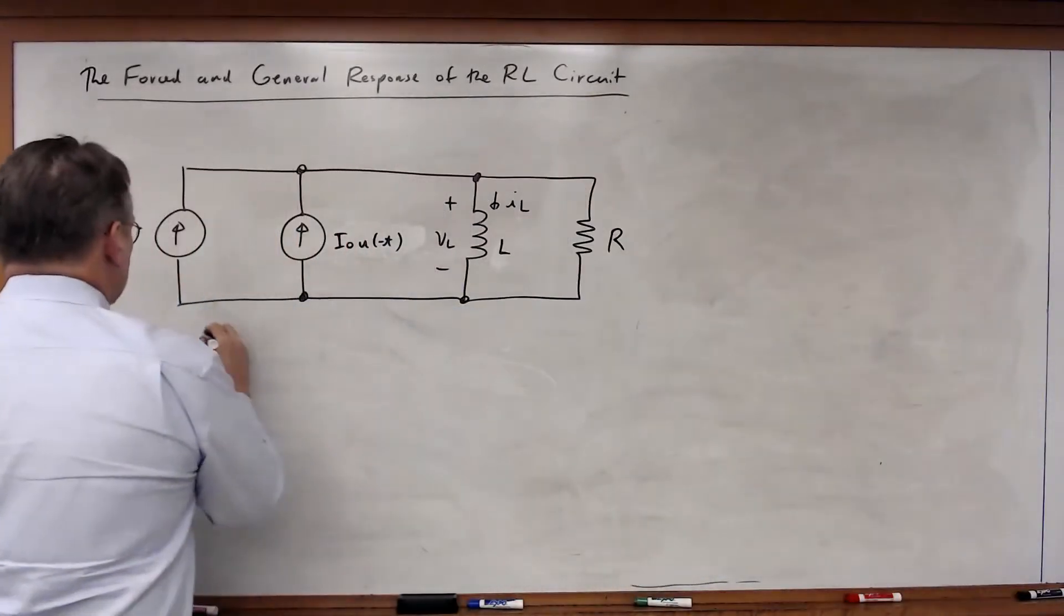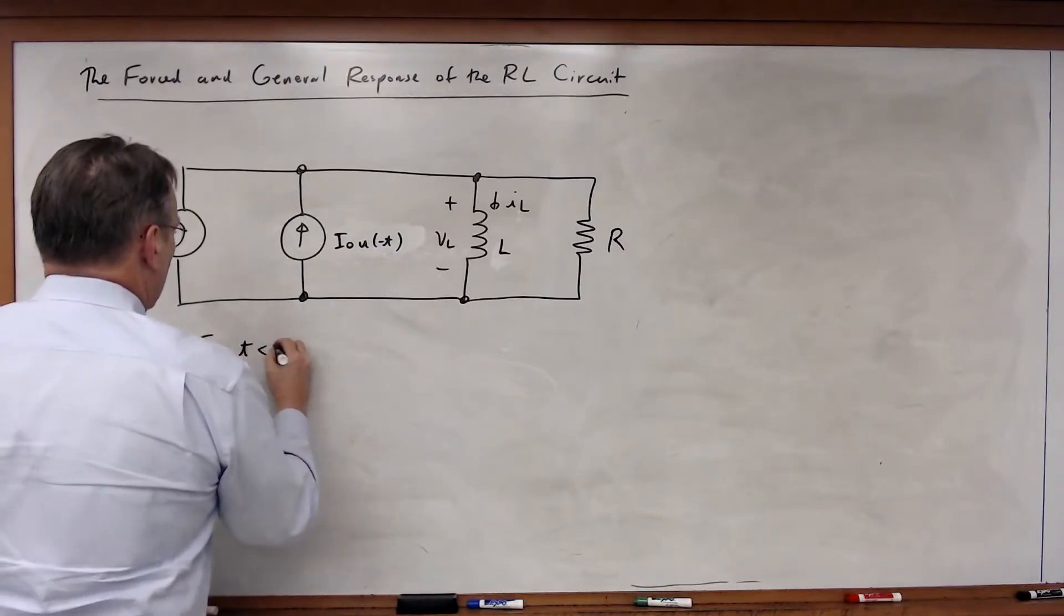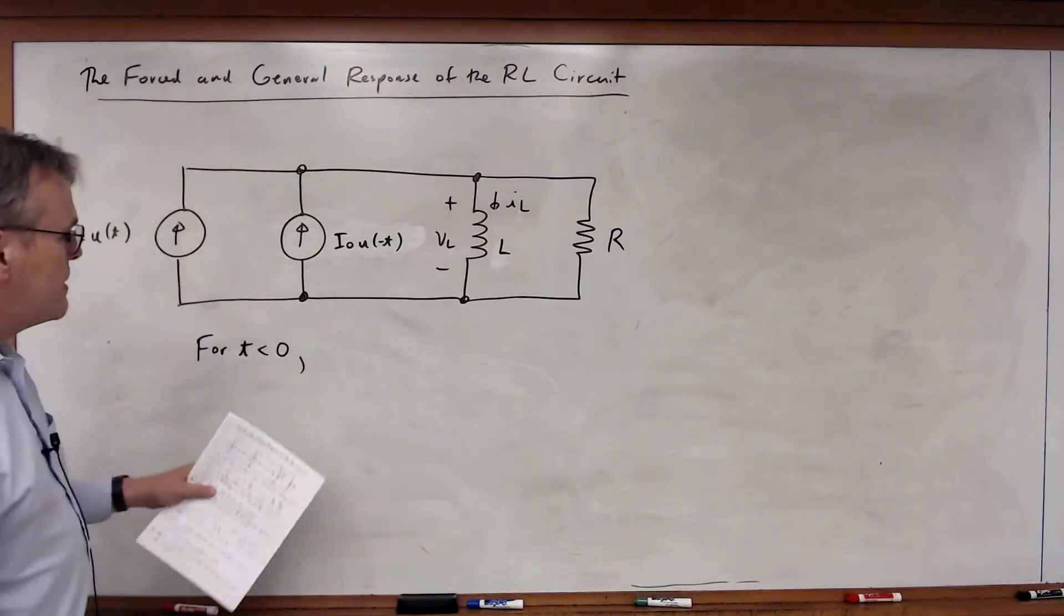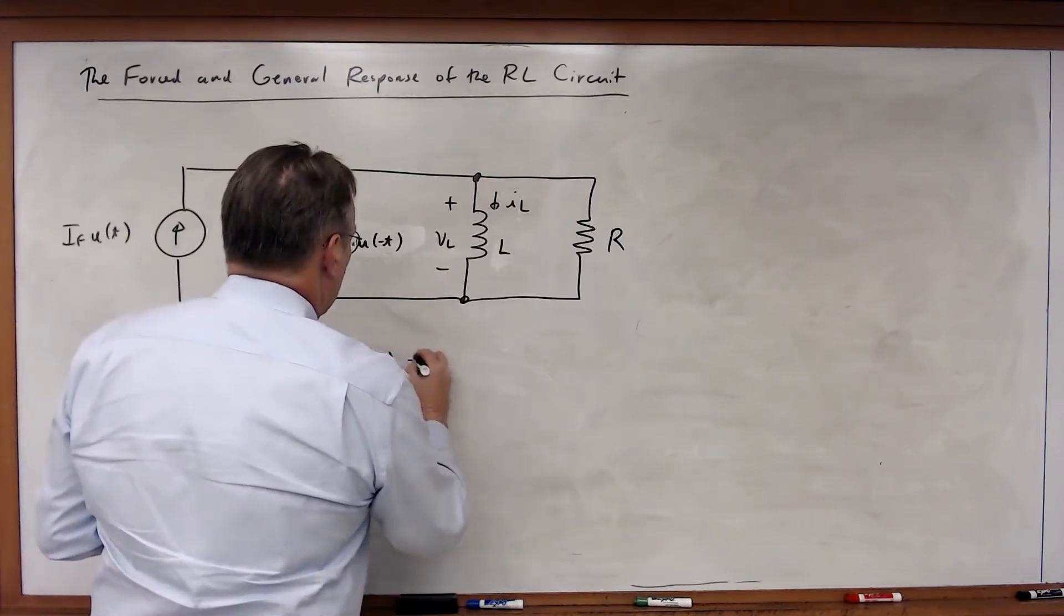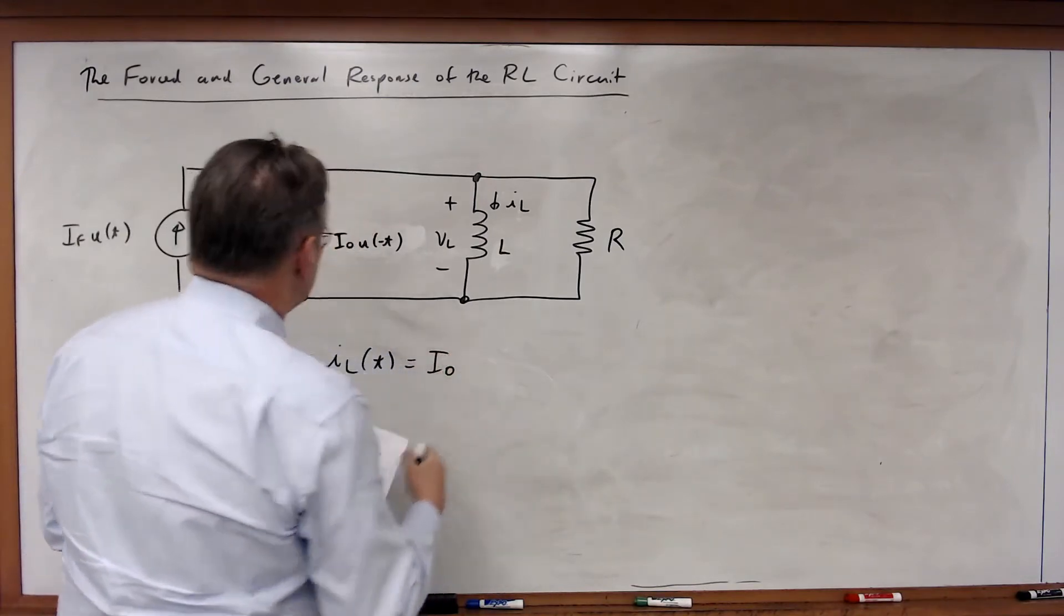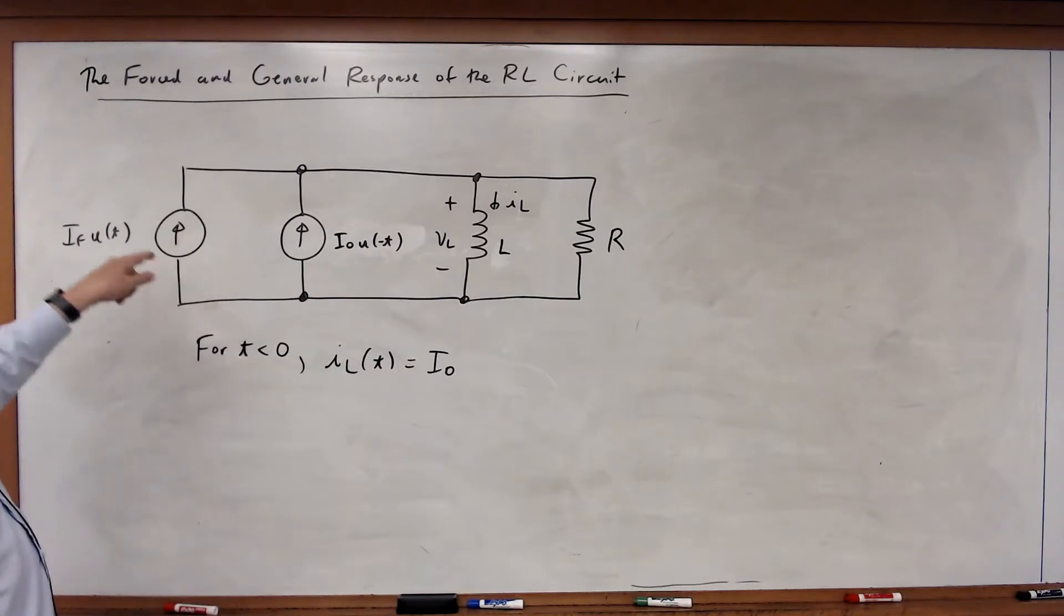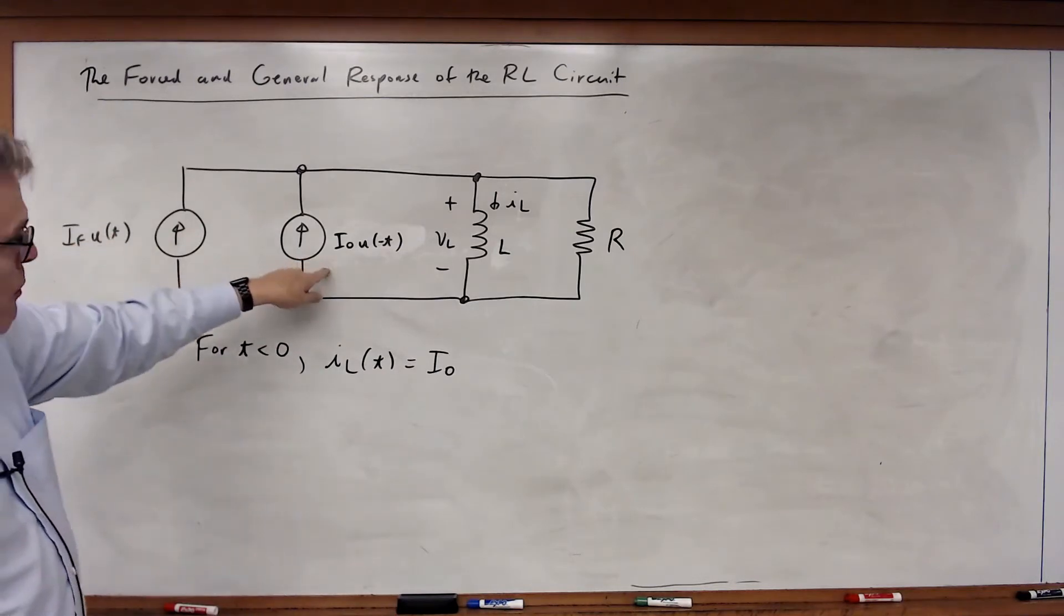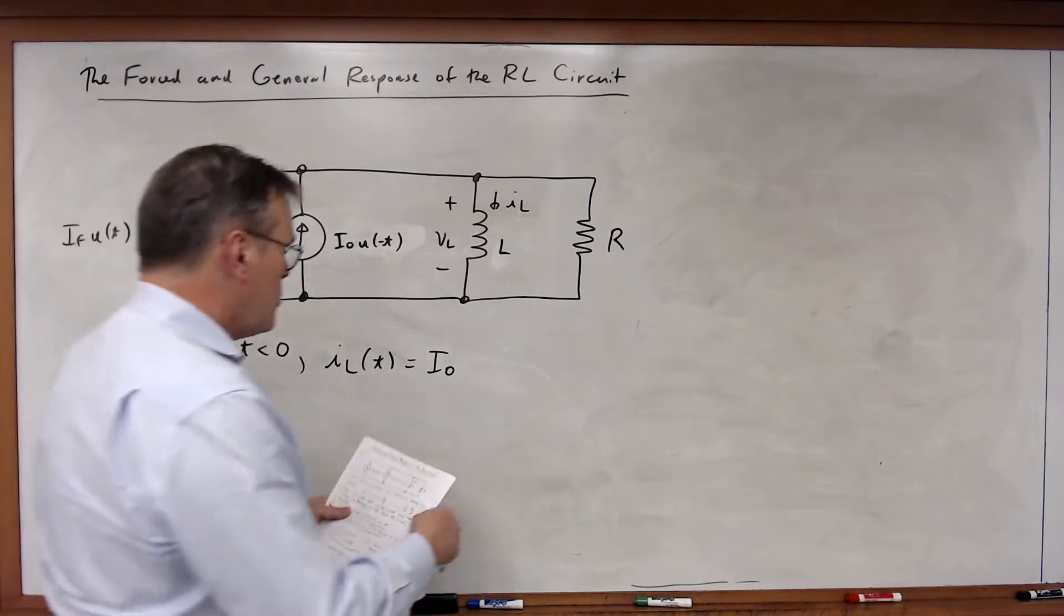So for t less than 0, what we'll find is that IL of t will be equal to I0. So for t less than 0, this source will be off, that will be on, and this assumes steady state.